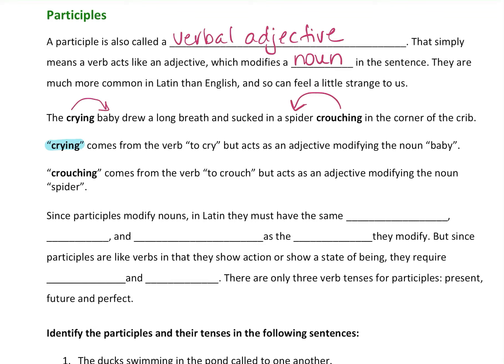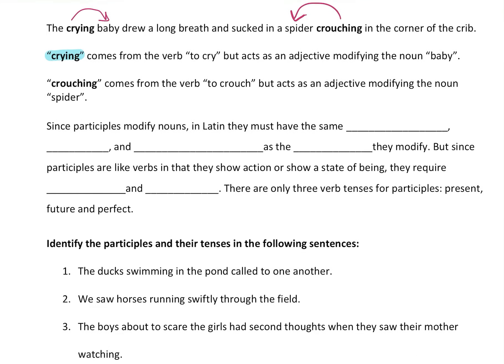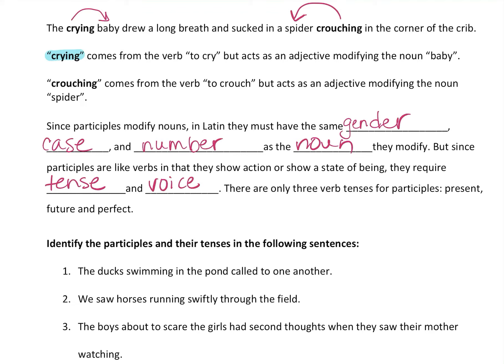What kind of spider? The crouching spider. Both in English and in Latin, these are called participles. Since participles modify nouns in Latin, they must have the same gender, case, and number as the noun they modify — that's not new to you. We're not going to learn any new endings; they won't behave any differently. The only new thing is that since participles are like verbs, they also require tense and voice. So participles have gender, case, number, tense, and voice.